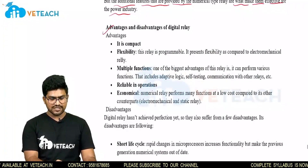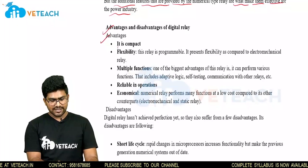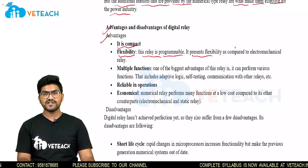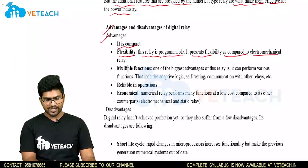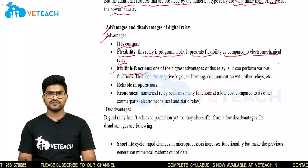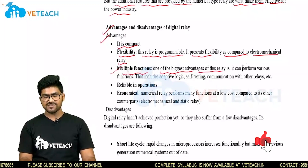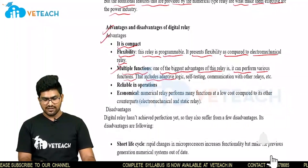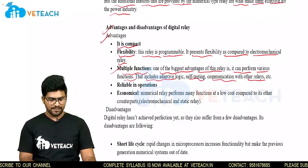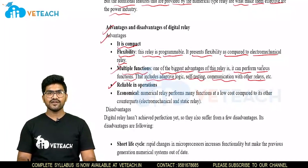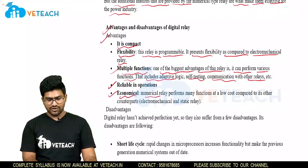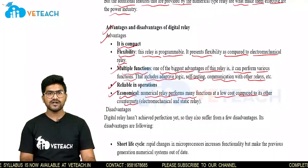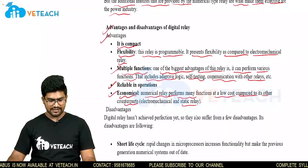Let us see the advantages and disadvantages of digital relays. Coming to advantages — it is compact and flexible. This relay is programmable and permits flexibility compared to electromechanical relays. Next is multiple functions: one of the biggest advantages of this relay is that it can perform various functions including adaptive logic, self-testing, and communication with other relays. Next is reliable operation. Coming to economical — numerical relays perform many functions at low cost compared to their counterparts like electromechanical and static relays.